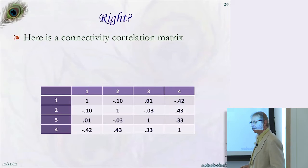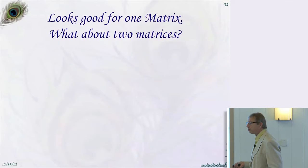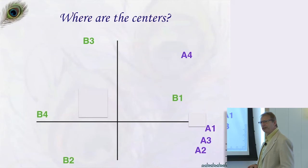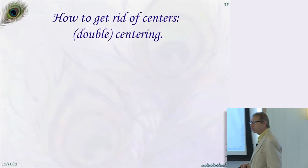Here is a connectivity correlation matrix. You apply eigenmagic and get a plot — it looks beautiful with four regions. It works well for one matrix. But when you have two matrices and do the analysis, you get something completely bizarre — the centers of these matrices are in different places, and that's the big problem.